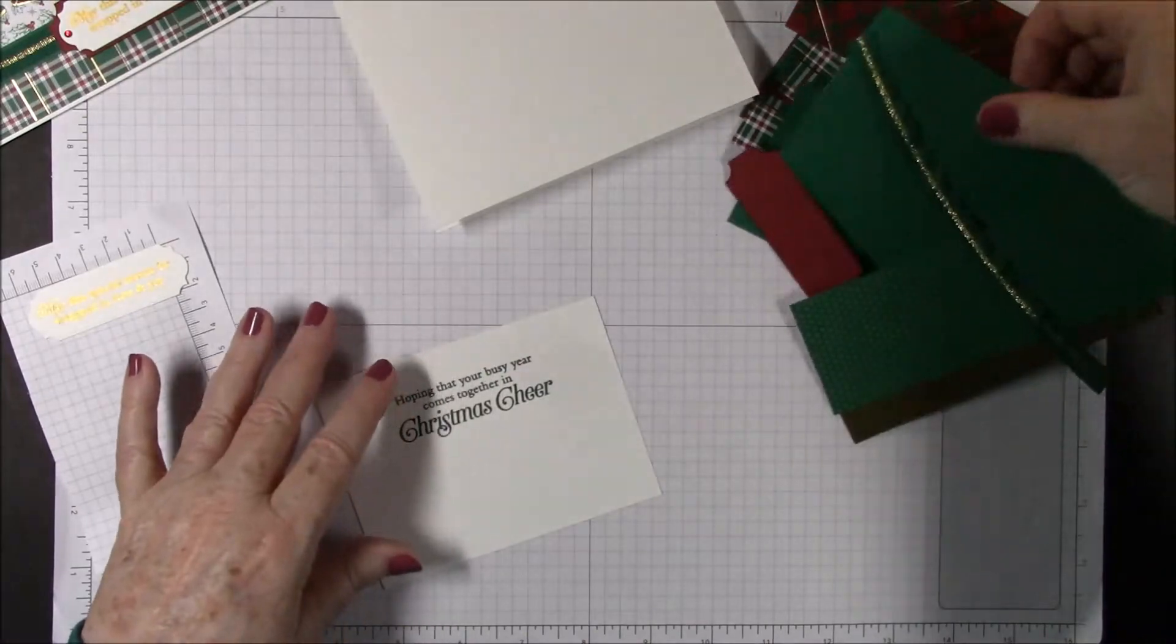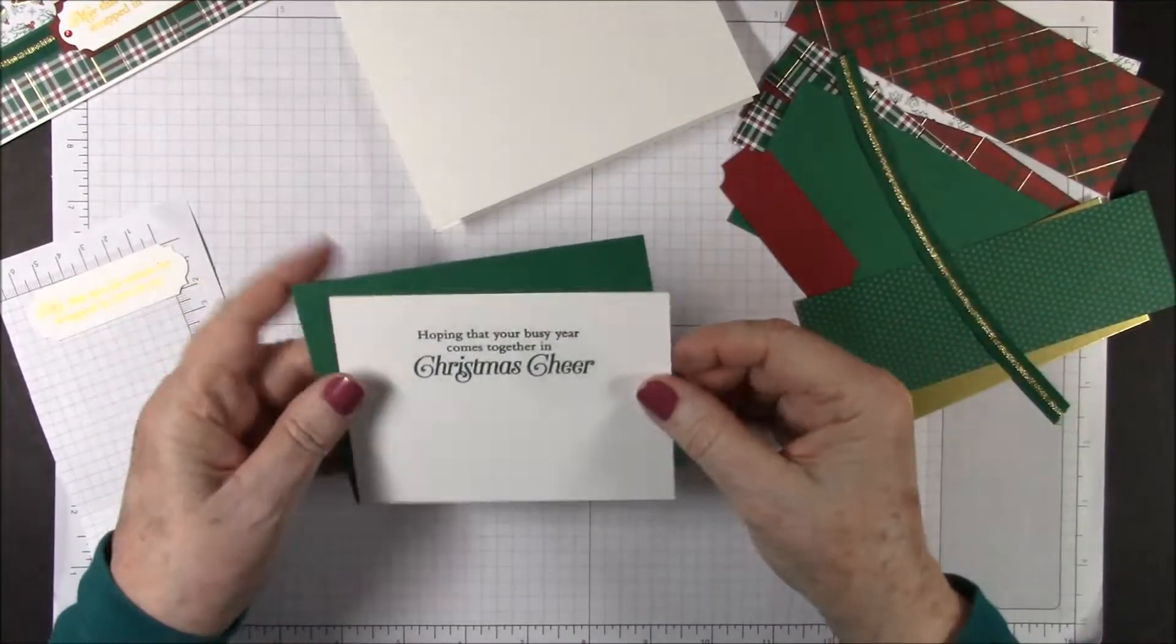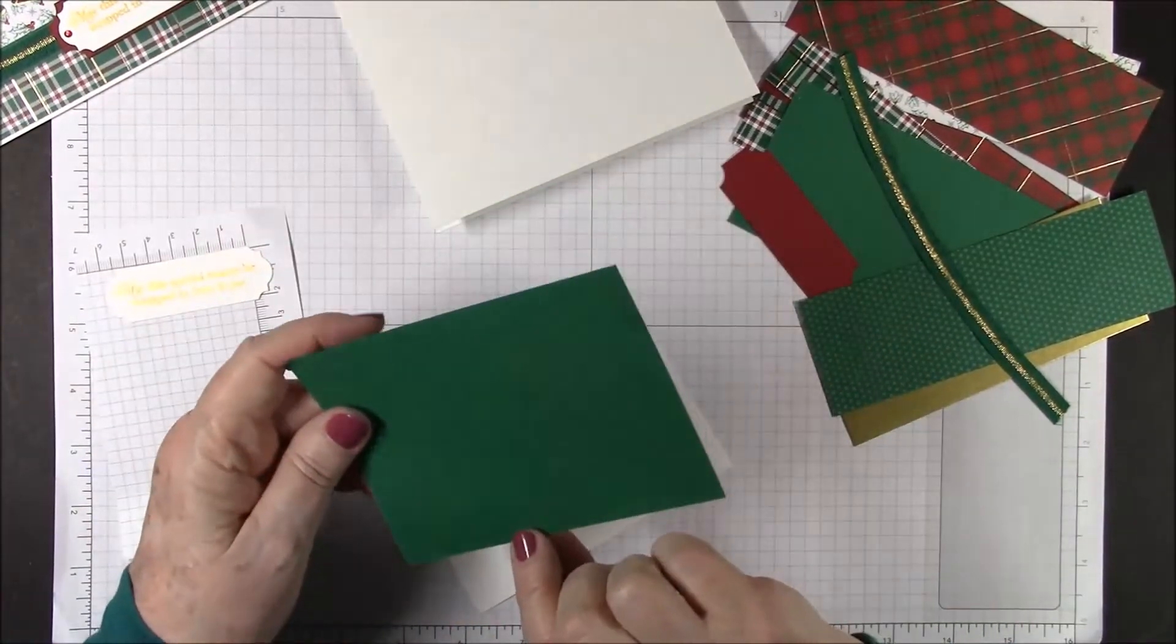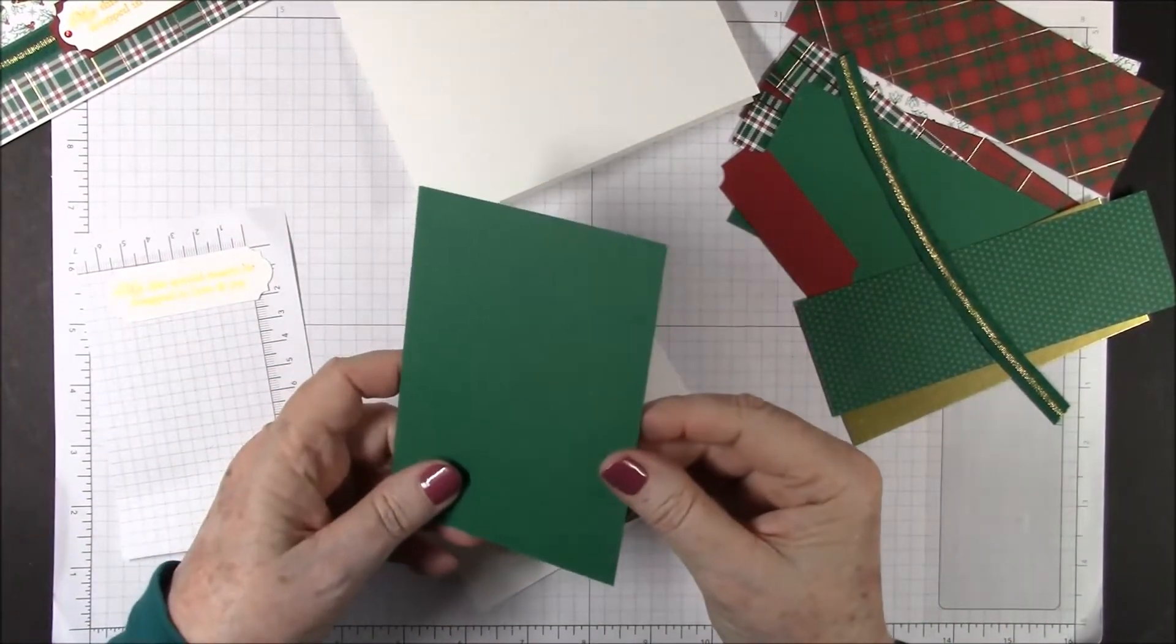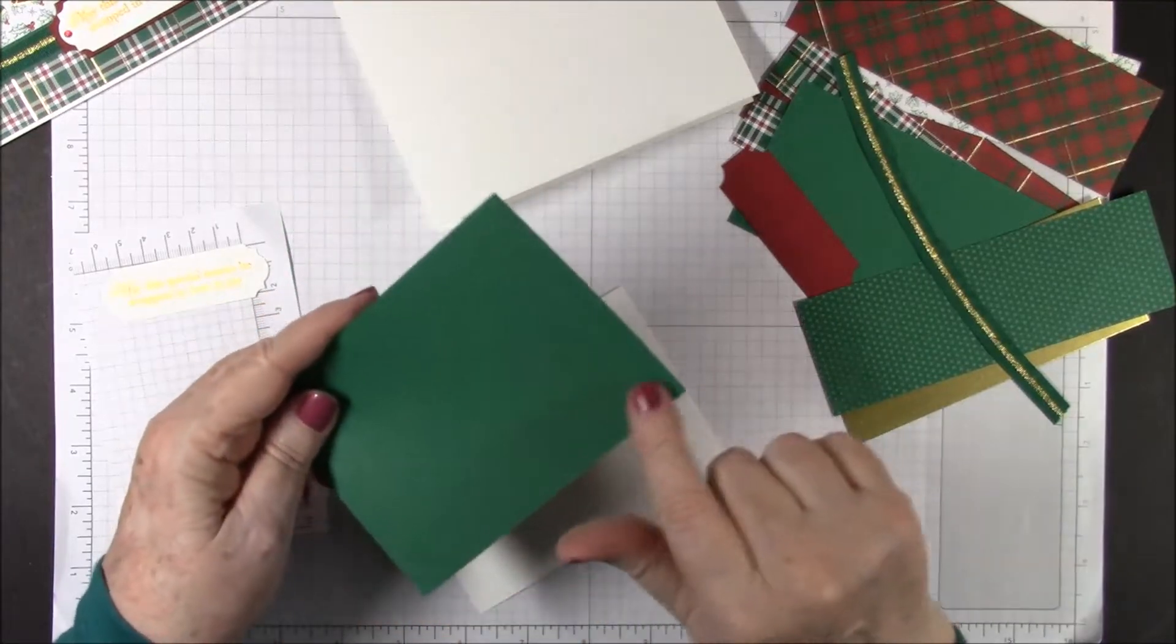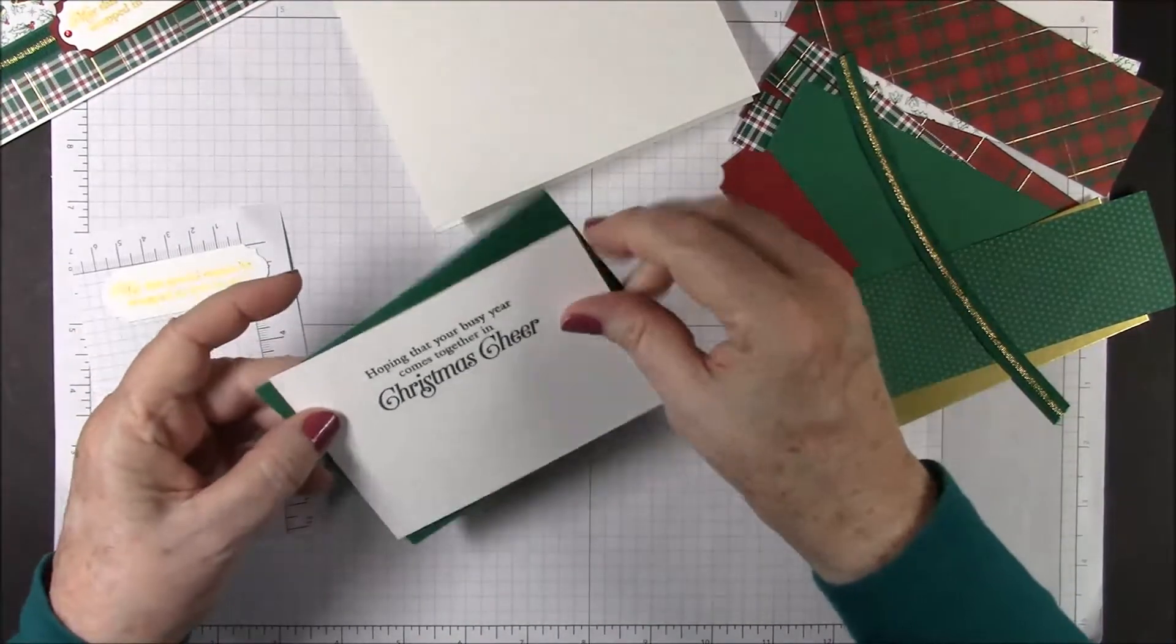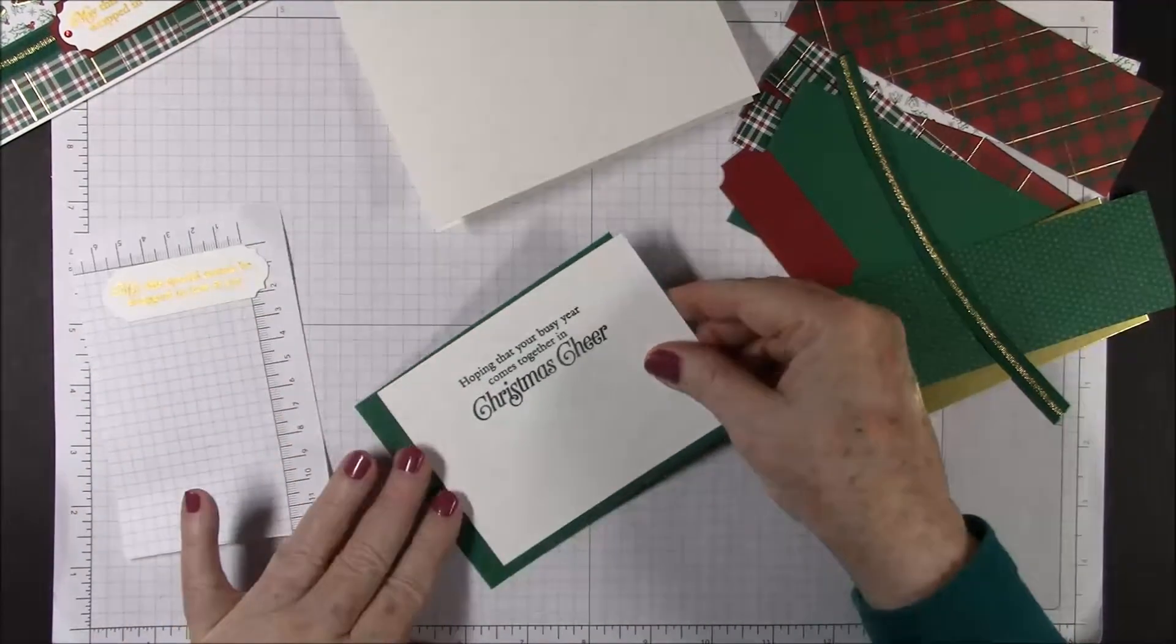We'll go ahead and do the inside of our card, which is a little different from what we normally do. We have a piece of shaded spruce for the inside sentiment. It is five by three and three quarters, and this is going to go on top of that. I'm going to put that on with snail.